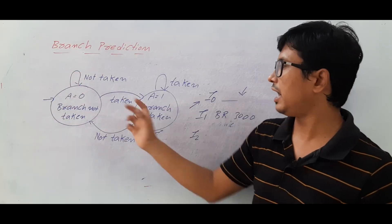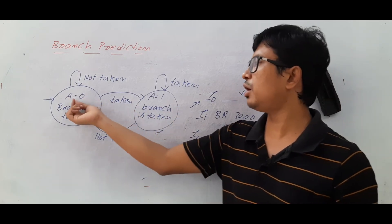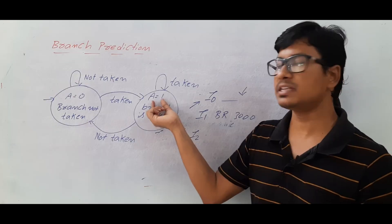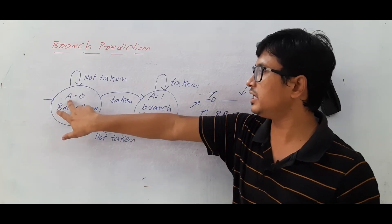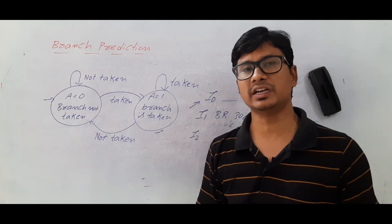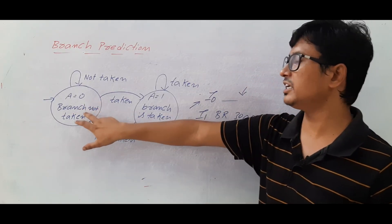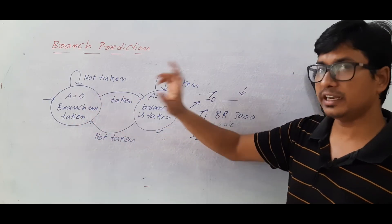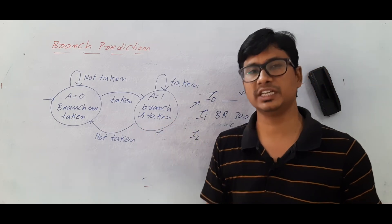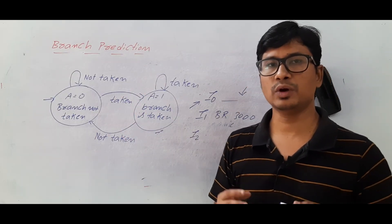In dynamic prediction, two states are maintained: branch not taken (0) and branch taken (1). If predicting 'not taken' and it is correct, remain in state 0. If predicting 'not taken' but branch is actually taken, switch to state 1. Similarly, if predicting 'taken' and it is correct, remain in state 1; if wrong, switch back to state 0. This state diagram captures how the predictor adapts its opinion based on actual outcomes.